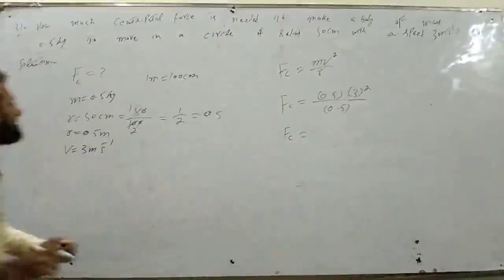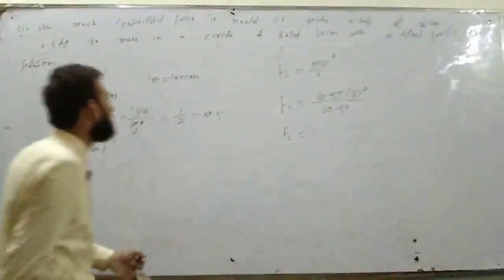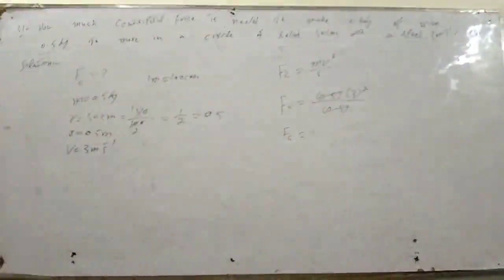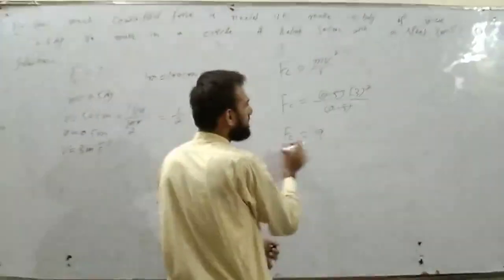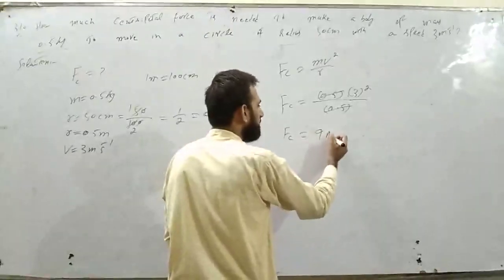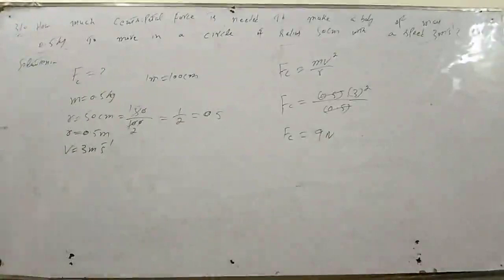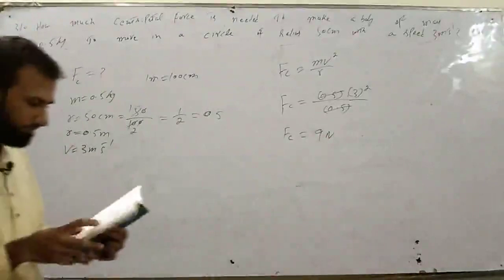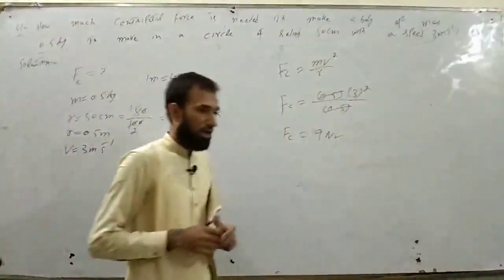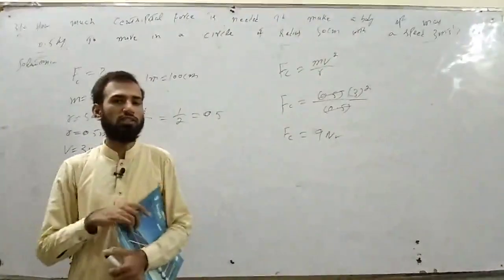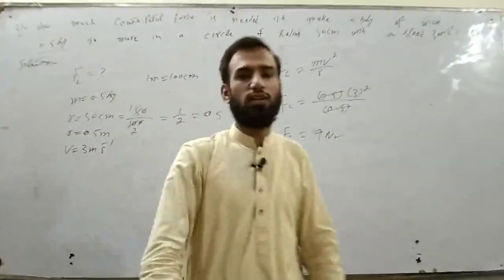Centripetal force Fc: 0.5 और 0.5 cancel हो जाएगा, 3 का square 9 आ गया। Centripetal force के unit newton होते हैं - आंस आ गया 9 newton। Book से compare करूँ तो 9 newton बिल्कुल correct है। यह आज हमने numericals खत्म कर लिए। Inshallah next lecture में next chapter start करेंगे। Allah Hafiz।